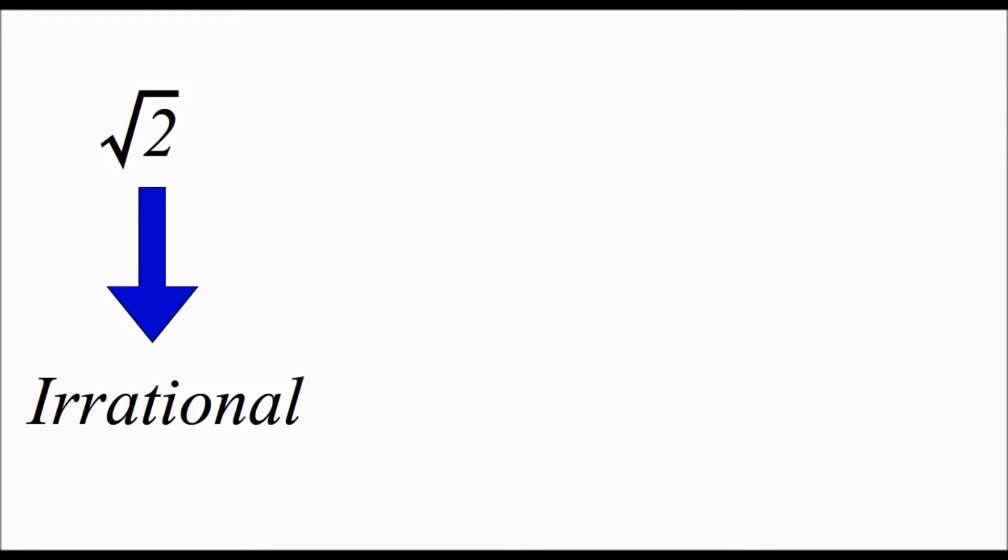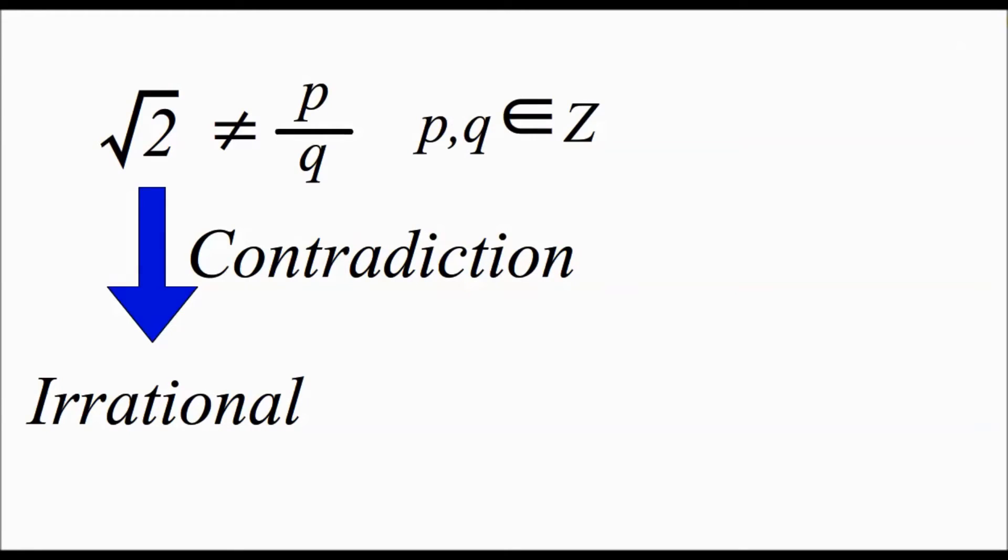It can be proven that it's irrational by using contradiction, which means that it cannot be written in the form of p over q, where p and q are both integers and relatively prime to each other. I don't have enough time to talk about it, but you can find the proof online.